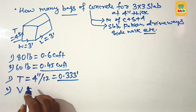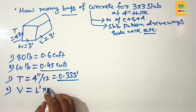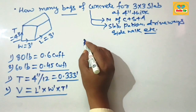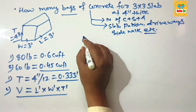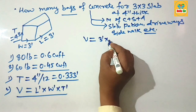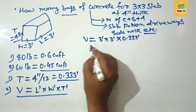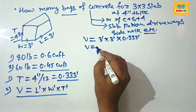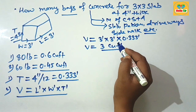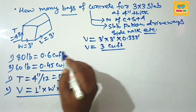The volume of concrete is calculated by multiplying all dimensions in feet: length in feet, width in feet, and thickness in feet. Putting in all values: length is 3 foot, width is 3 foot, and thickness is 0.33 feet. Multiplying all together gives about 3 cubic feet. This means you require 3 cubic feet of concrete for a 3 by 3 slab at 4 inches thick.